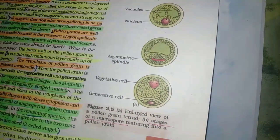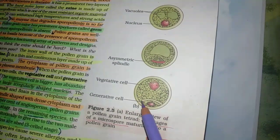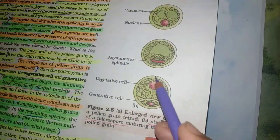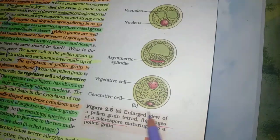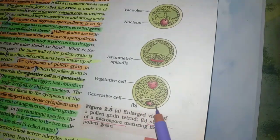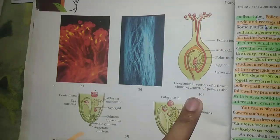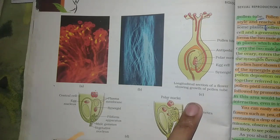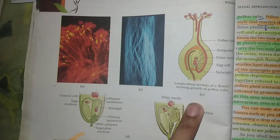Try to understand and imagine how it happens. This part is the vegetative cell and this is the generative cell — two types of cells in a pollen grain.